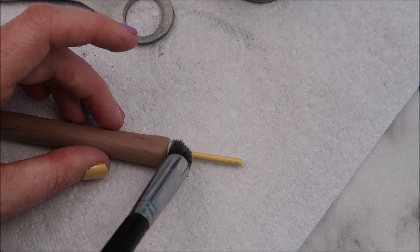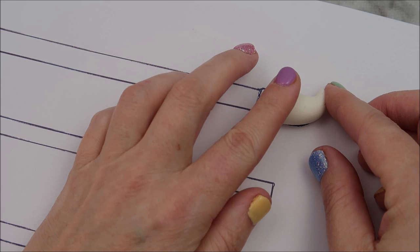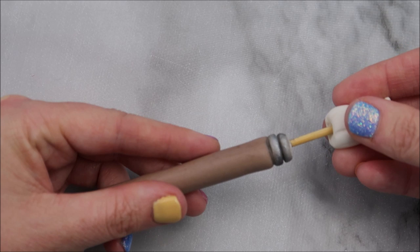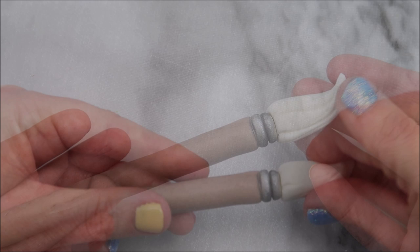Roll some white modelling paste into a teardrop shape. And then we're going to create some indentations to make it look more like a brush. Pop that on top of your brush, and if it gets a little bit squished you can play about with it just to get it to the right shape.